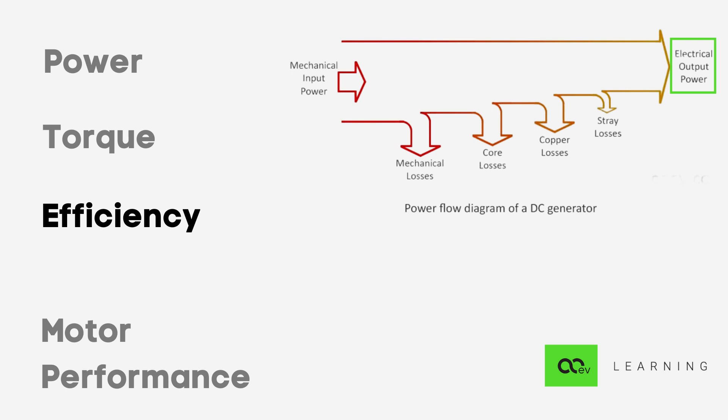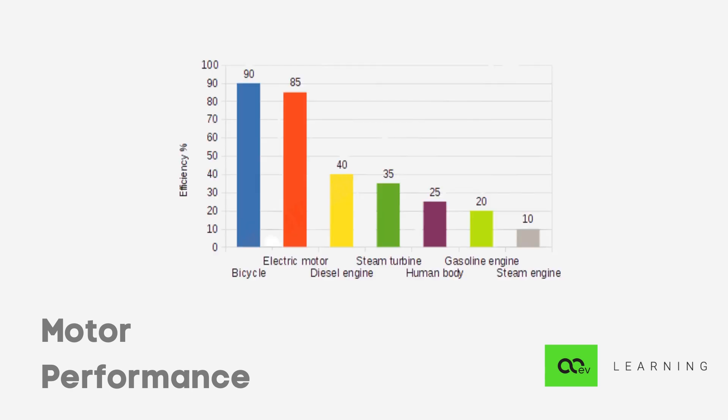Thus, whatever is left after subtracting these losses from the input is the output power of the motor, generally turned in torque and RPM.